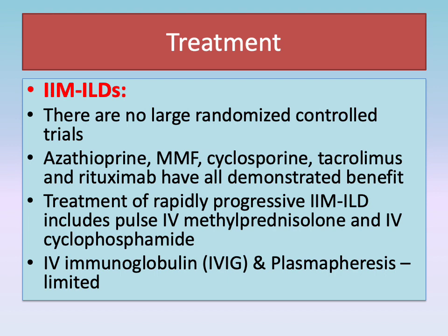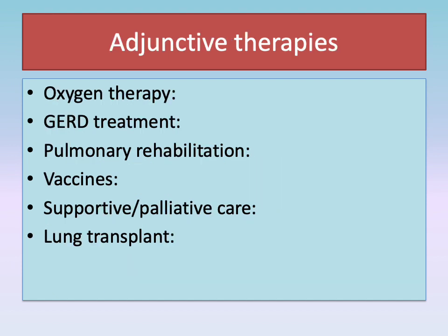There are no large randomized controlled trials in the treatment of myositis-related ILD. Different immunosuppressive agents have been used. For treatment of rapidly progressive myositis-related ILD, these include pulse IV methylprednisolone and IV cyclophosphamide or rituximab. Adjunctive therapies include oxygen therapy, gastroesophageal reflux disease treatment with high dose PPI, pulmonary rehabilitation, influenza and pneumococcal vaccines, palliative care, and lung transplant if disease progresses despite therapy.